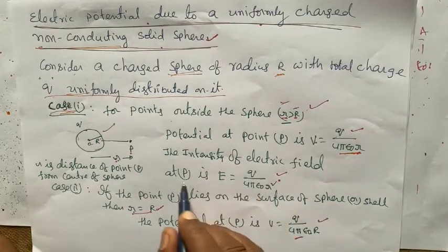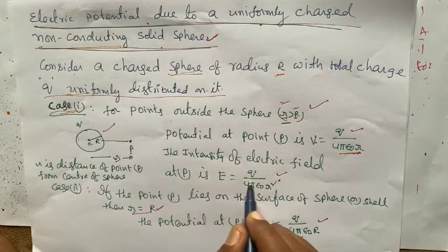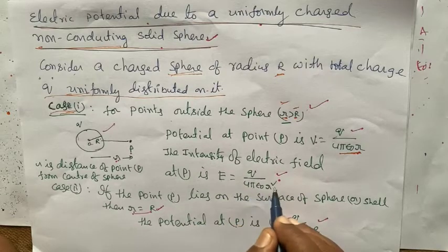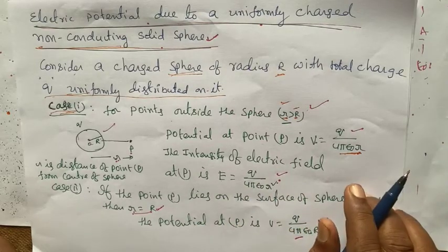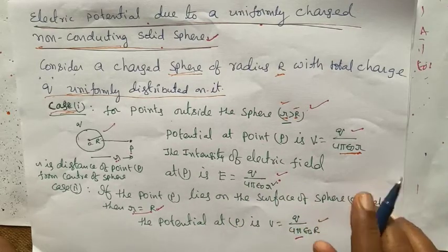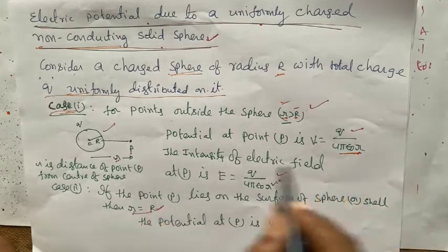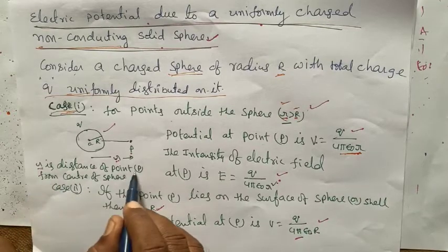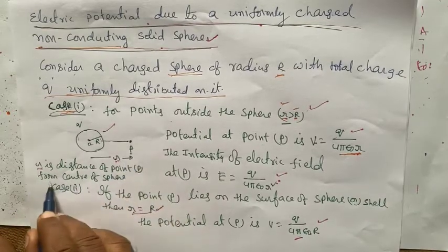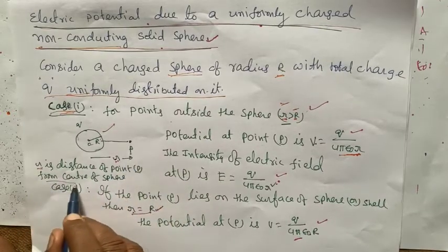Potential at point P is V equals Q divided by 4 pi epsilon r, where r is small r, not capital R. Intensity of electric field at point P is q divided by 4 pi epsilon r squared. Here small r is the distance of reference point P from the center of the sphere.